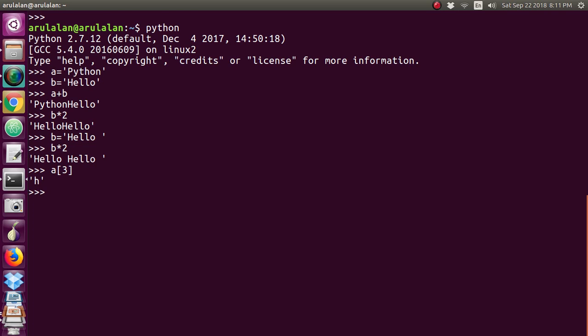If you go a[3], the value in a is 'python'. So zero is 'p', one is 'y', and two is 't', three is 'h'. So I have accessed a[3], so your output is 'h'.